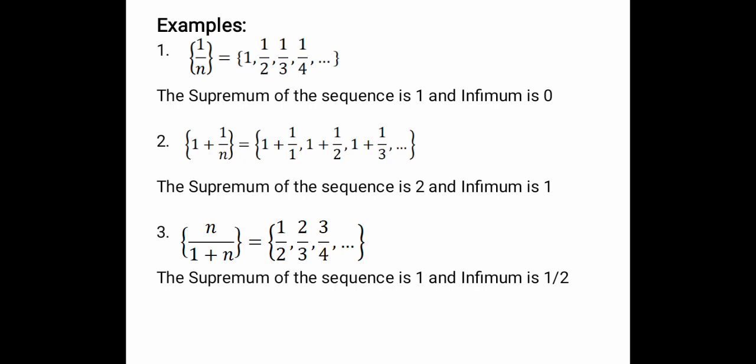The sequence is bounded above by 1 and bounded below by 0, because the terms tend to zero but are never exactly zero — they are greater than 0 and less than or equal to 1. Any number less than 1 like 1/2 or 1/3 cannot be the upper bound. Therefore the supremum of the sequence is 1 and the infimum is 0.